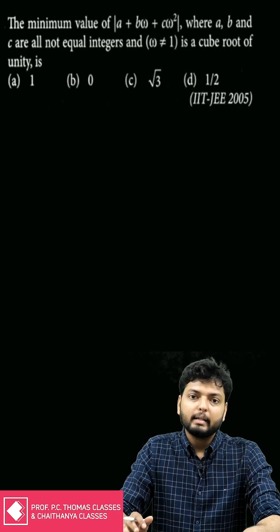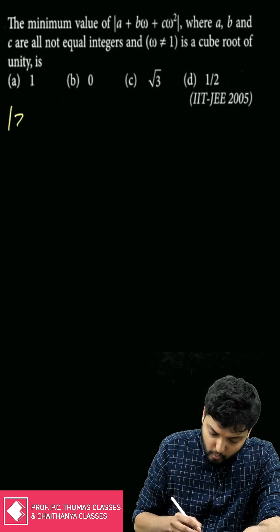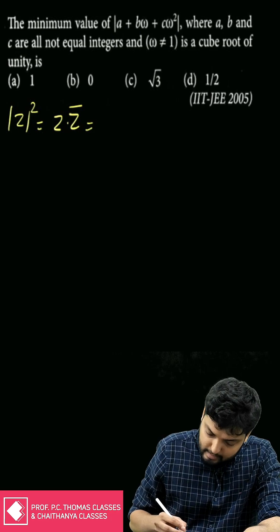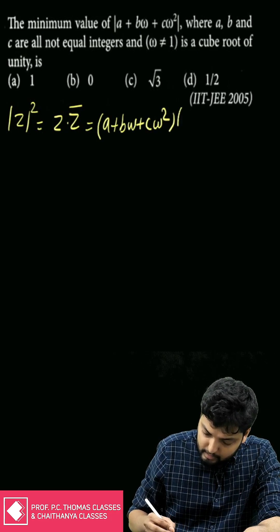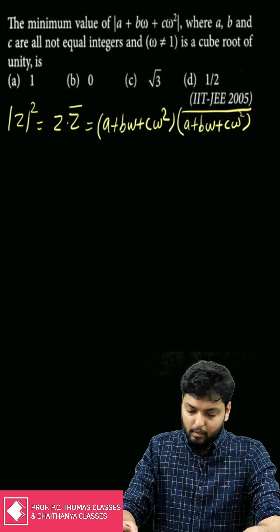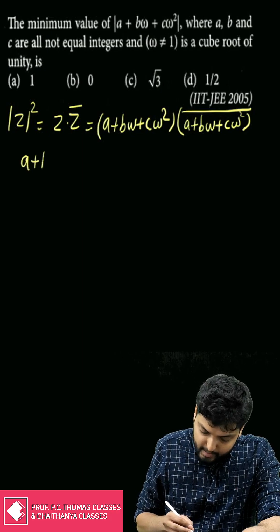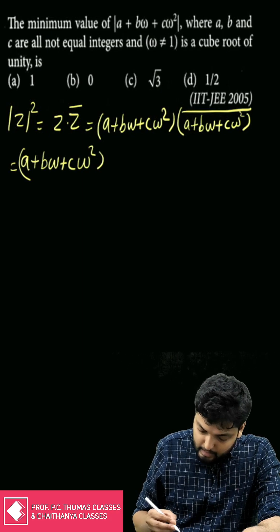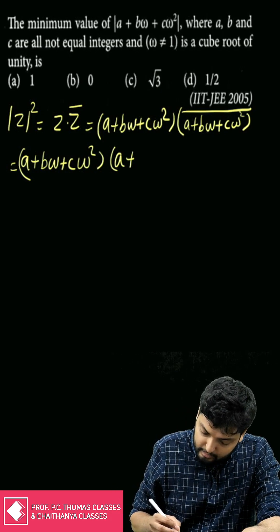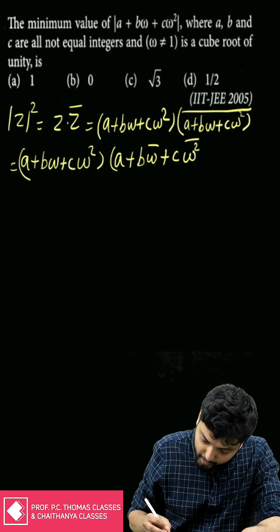We can try to find |z|². We know |z|² = z · z̄, that is (a + bω + cω²) multiplied by the conjugate of (a + bω + cω²). Since the conjugate of a sum equals the sum of conjugates, and a and b are real numbers whose conjugates are themselves, we get a + bω̄ + cω̄².